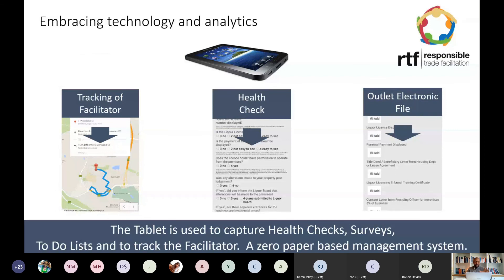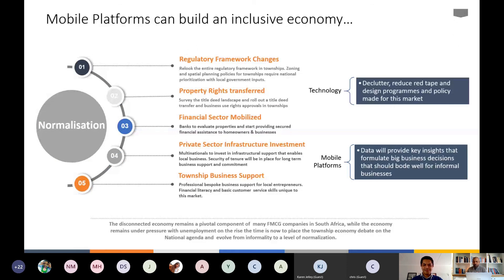We embraced technology completely — nothing was left to chance. It is a wave of technology, and these platforms are coming up, but we should be looking at designing solutions that will work for both the merchant and the consumer in the informal economy. My last slide really talks to technology and decluttering, reducing red tape, and designing programs and policy made for this market. Most importantly, the data you get from there provides key insights that formulate business decisions that help the sector work quite well.